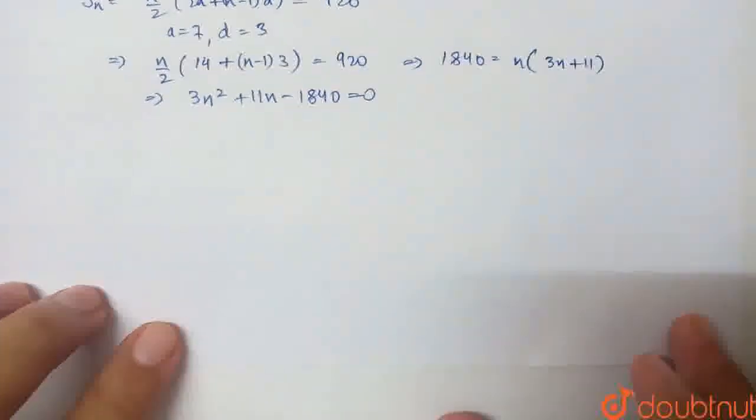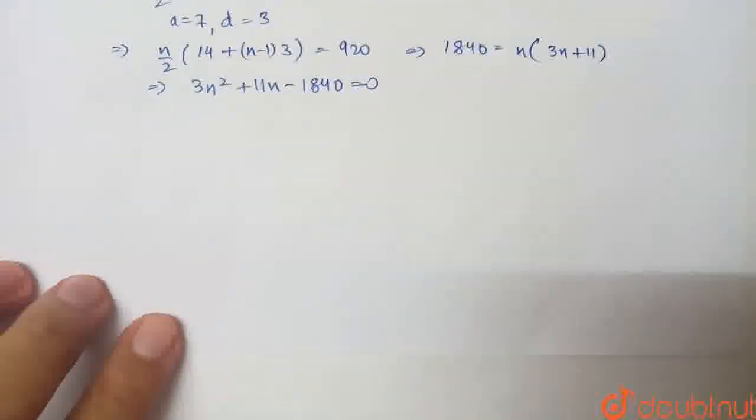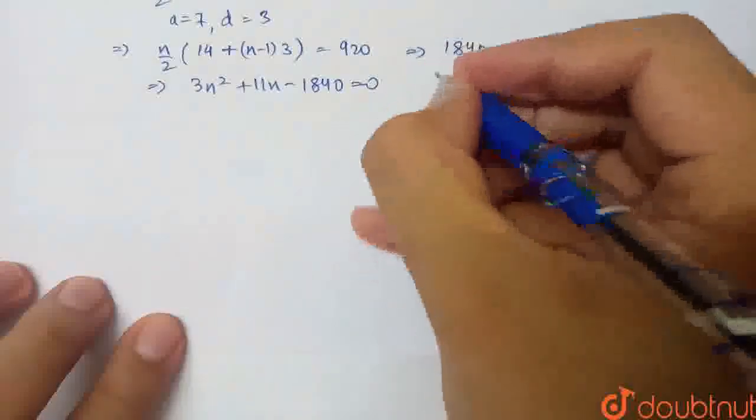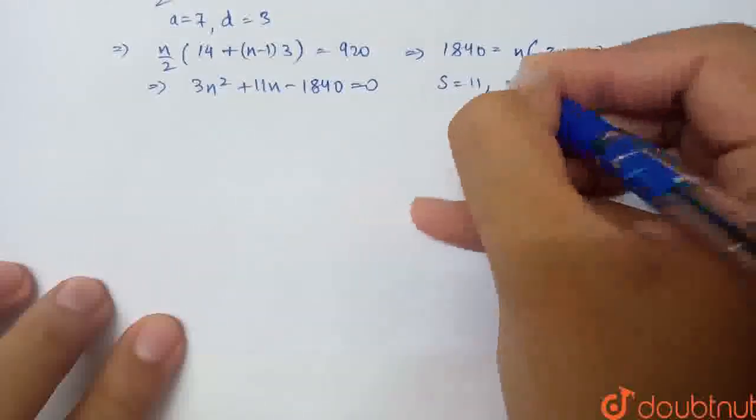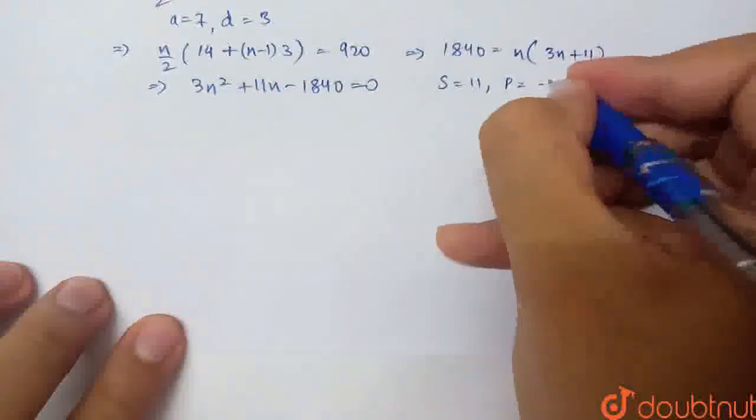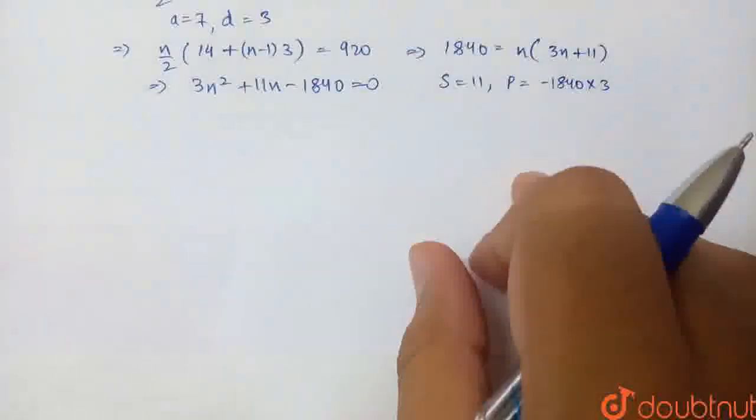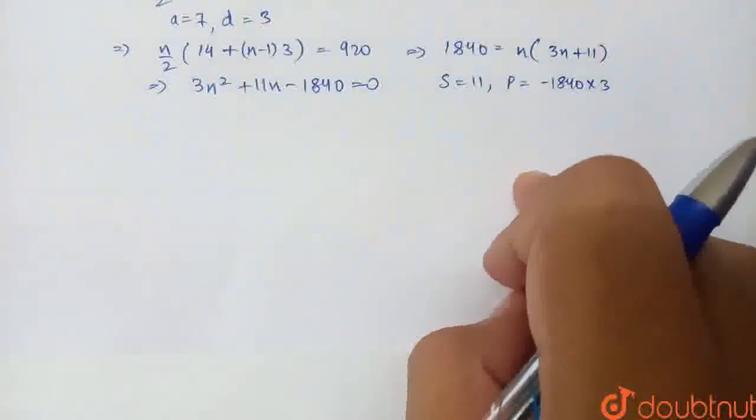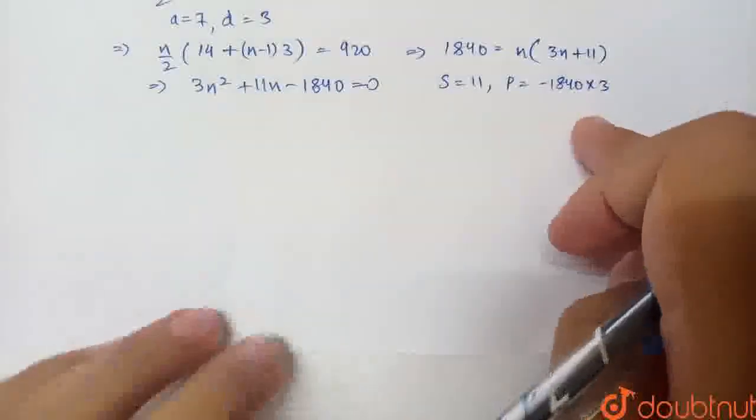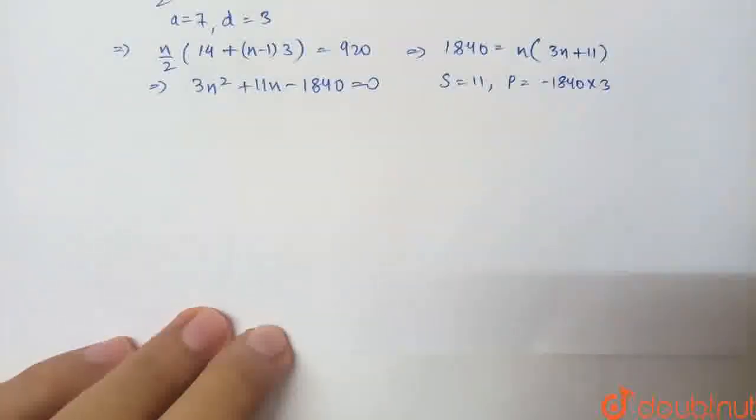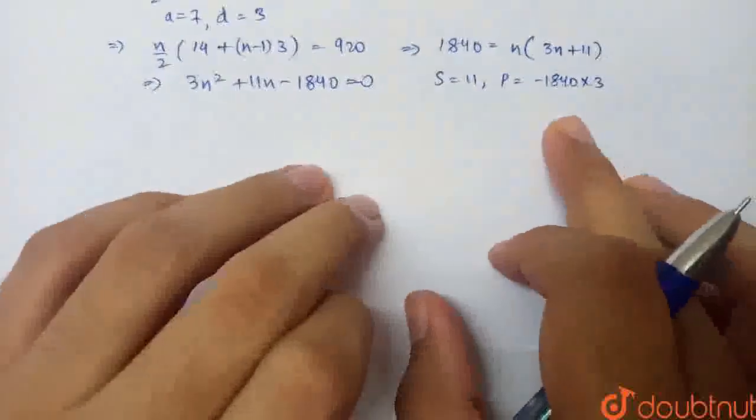Now, if I try to split the middle term, it will be factorization. I have to make the sum 11 and the product will be -1840 × 3. So this is our product. This should be the factor.